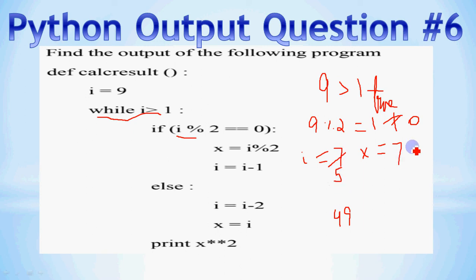So x mein humne i put kiya, is liye x bhi change ho jayega. X mein bhi i ki new value a jayegi, kyunki i ab change ho gaya. So i is equal to i minus 2 se i 5 ho gaya, aur phir x is equal to i se, aapka joh i hai woh x mein chala gaya, mtlab joh 5 hai, woh x mein chala gaya, toh x bhi 5 ho gaya.